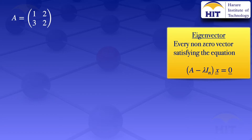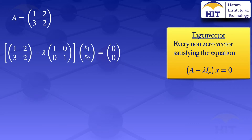So if we substitute our given matrix 1, 2, 3, 2 into that equation, we would have the matrix [[1,2],[3,2]] minus lambda multiplied by the identity 2 by 2 matrix [[1,0],[0,1]], multiplied by the column vector x with entries x1 and x2, equals the zero-vector with two elements 0, 0.